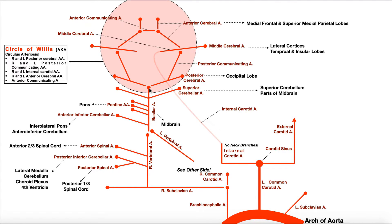The basilar artery terminates by forming the left and right posterior cerebral arteries, which are the first components of the circle of Willis. The posterior cerebral arteries supply the occipital lobe of the brain. A stroke of the posterior cerebral artery may result in blindness or partial blindness — specifically hemilateral hemianopsia.